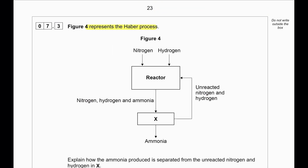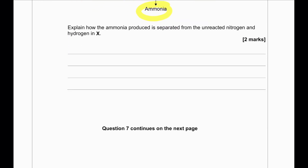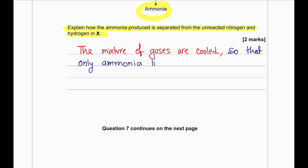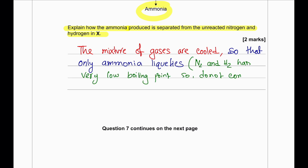Figure 4 represents the Haber process. Nitrogen and hydrogen are put into a reactor; ammonia is found in the mixture once the product is produced. The ammonia is collected and the unreacted nitrogen and hydrogen are recycled back into the reactor. The mixture is cooled to a low temperature — only ammonia liquefies, while nitrogen and hydrogen have very low boiling points and remain as gases.